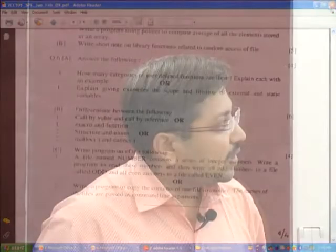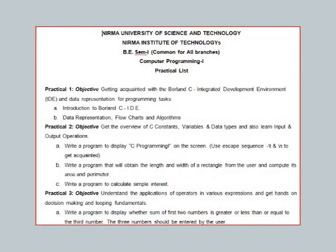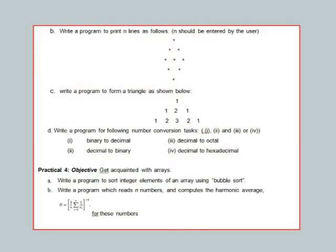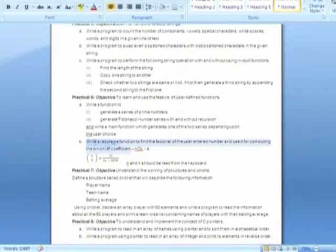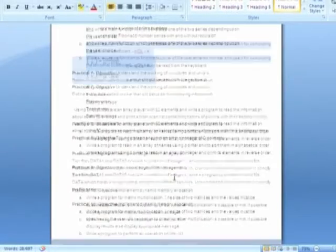Lab assignments for CP1 are based on the lesson plan modules. The first practical involves getting acquainted with the C environment using Borland C, which is used for both C and C++ programming. Subsequent practicals cover data representation, constants and variables, output patterns, loops, binary-to-decimal and decimal-to-binary conversion, arrays, sorting, harmonic calculations, functions, structures, unions, files, and dynamic memory — ten practicals in total.